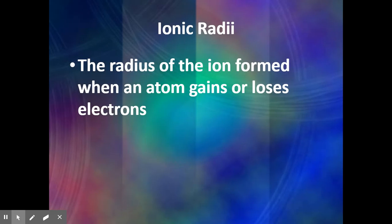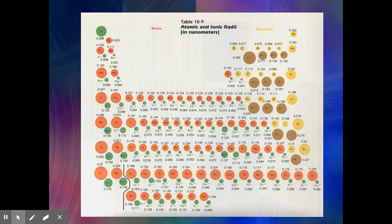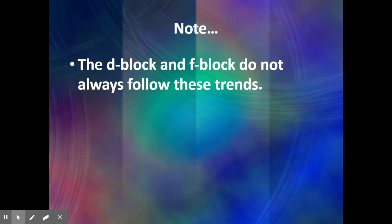Ionic radius is the size of an atom when it gains or loses an electron. In the diagram, the reddish-orange color represents the neutral atom size, and green shows the size when it becomes an ion. On the other side, yellow is neutral and brown is the ion size. One important note: the D block and F block do not always follow these periodic trends, so we'll generally stay away from those.